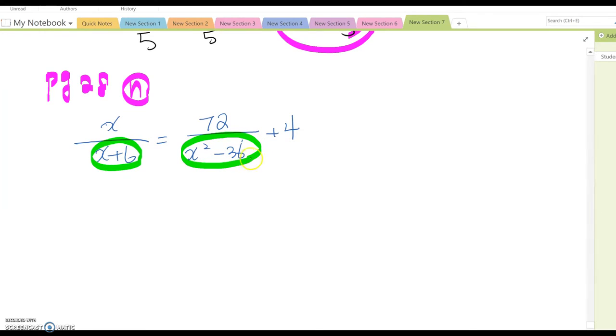x plus 6 and x minus 6 here, right? So when you look at this one, what can be the LCD? Obviously, x plus 6 repeats, so we count one time, and then take out the remaining factor. So it becomes x plus 6 times x minus 6. That is the LCD value.